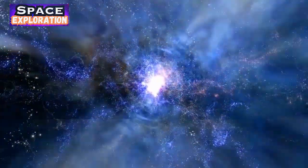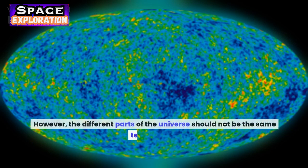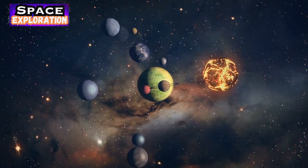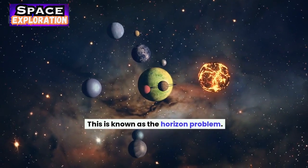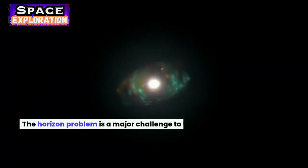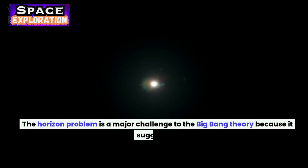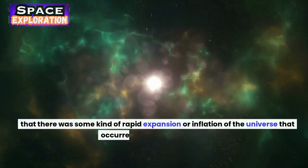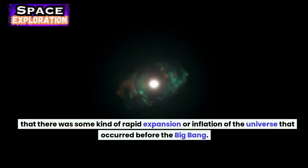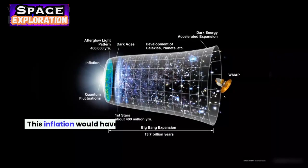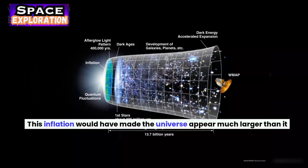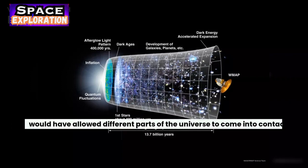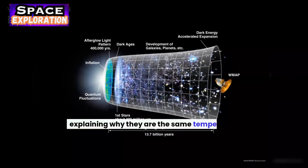However, the different parts of the universe should not be the same temperature because they could not have come into contact with each other. This is known as the Horizon Problem. The Horizon Problem is a major challenge to the Big Bang Theory because it suggests that there was some kind of rapid expansion or inflation of the universe that occurred before the Big Bang. This inflation would have made the universe appear much larger than it actually was and would have allowed different parts of the universe to come into contact with each other, explaining why they are the same temperature.